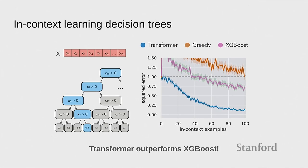Finally, we look at decision trees. For decision trees, we looked at the greedy algorithm and XGBoost, which is the state-of-the-art decision tree learning algorithm. Here, the transformer actually outperforms XGBoost, at least on this synthetic data distribution. This is not claiming you should ditch XGBoost and use this transformer — but it's curious that the transformer is able to learn some sort of algorithm that, at least on this distribution, outperforms hand-coded algorithms.